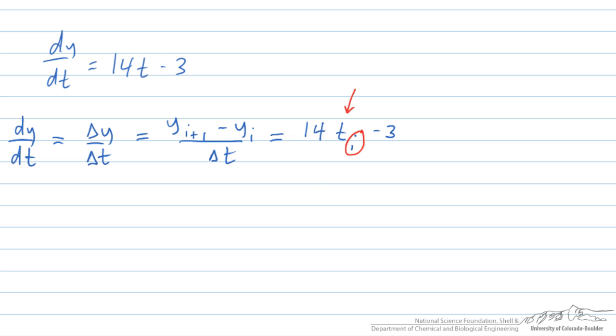So we want to calculate that at the current time value. Now if I expand this and solve for y_i+1, we see that that is equal to y_i plus our Δt, and in this example I am just going to choose that to be 0.1 times 14t minus 3.